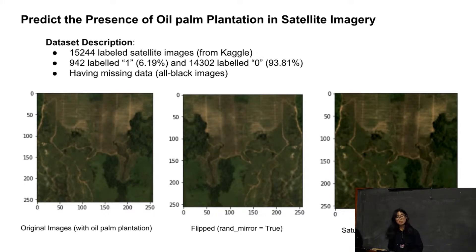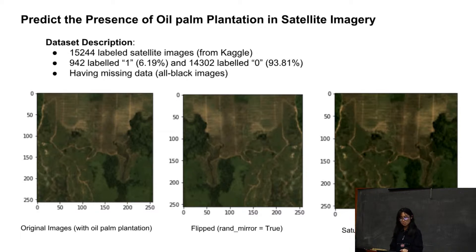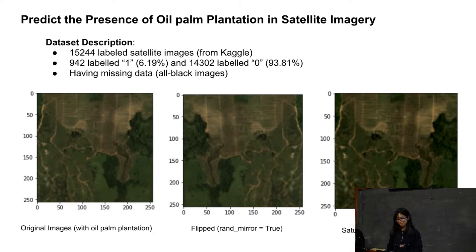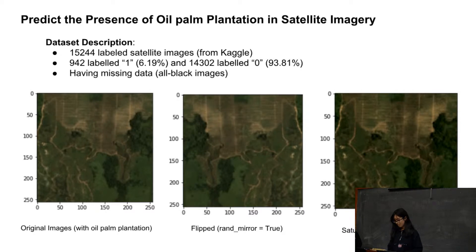Hello, everyone. I'm going to give a brief introduction to our project. Let's first take a look at the first satellite image on the screen. In the image, you can see on the top part there are some straps, which are representing the oil palm plantation. Our goal is to train a convolutional neural network model which takes a satellite image as input and outputs a prediction of how likely the image contains oil palm plantation.